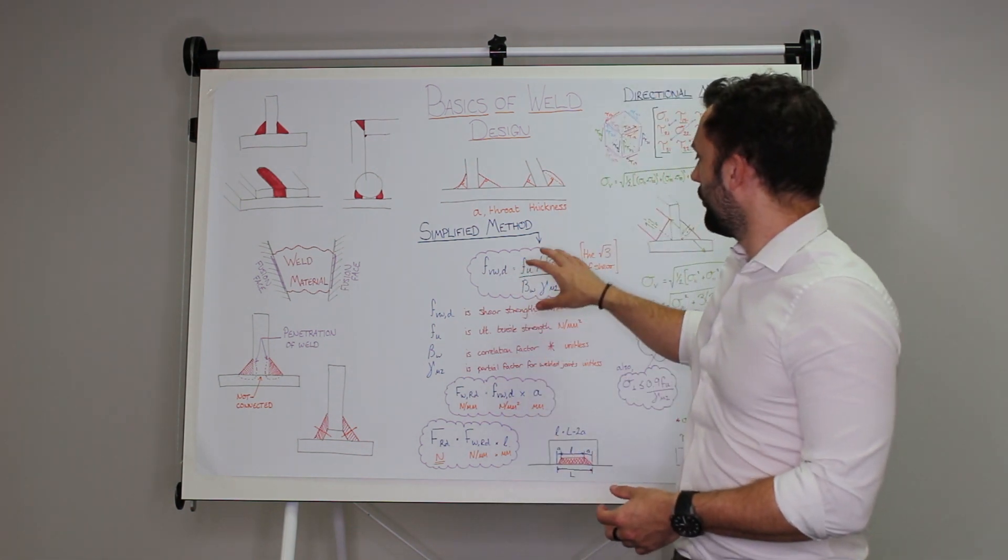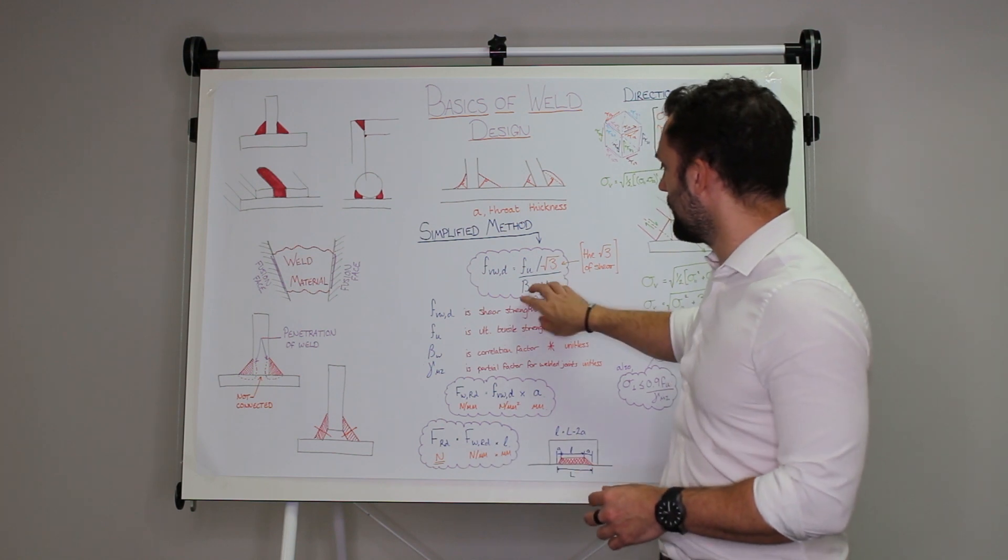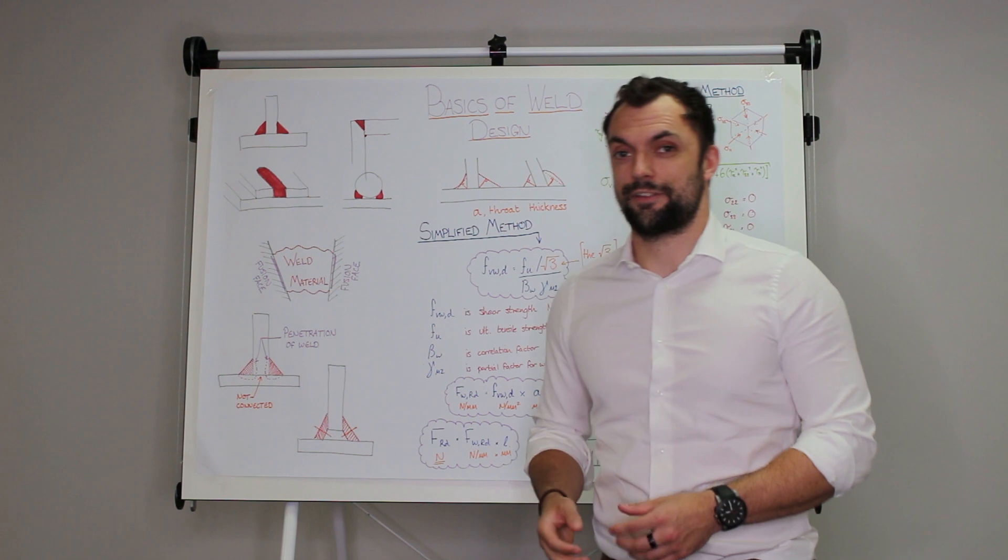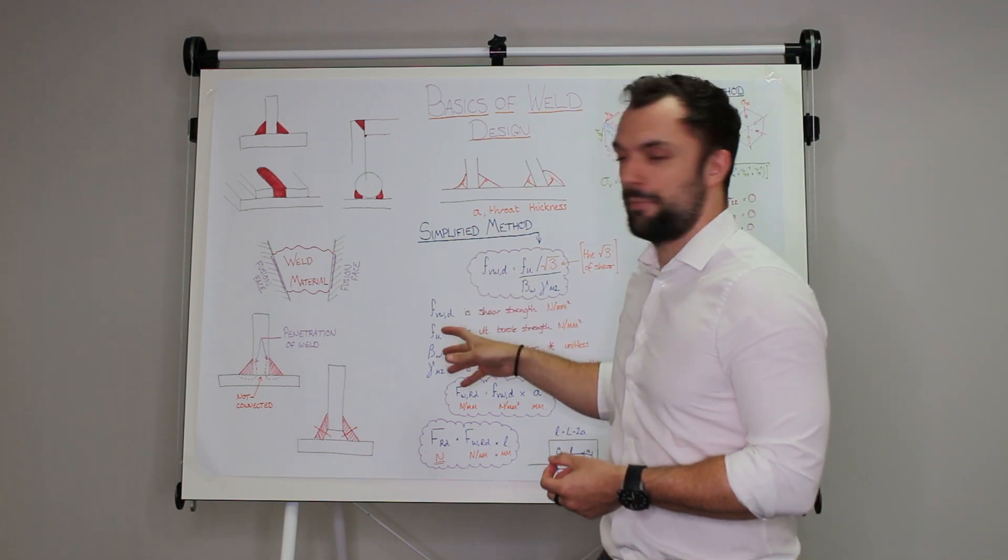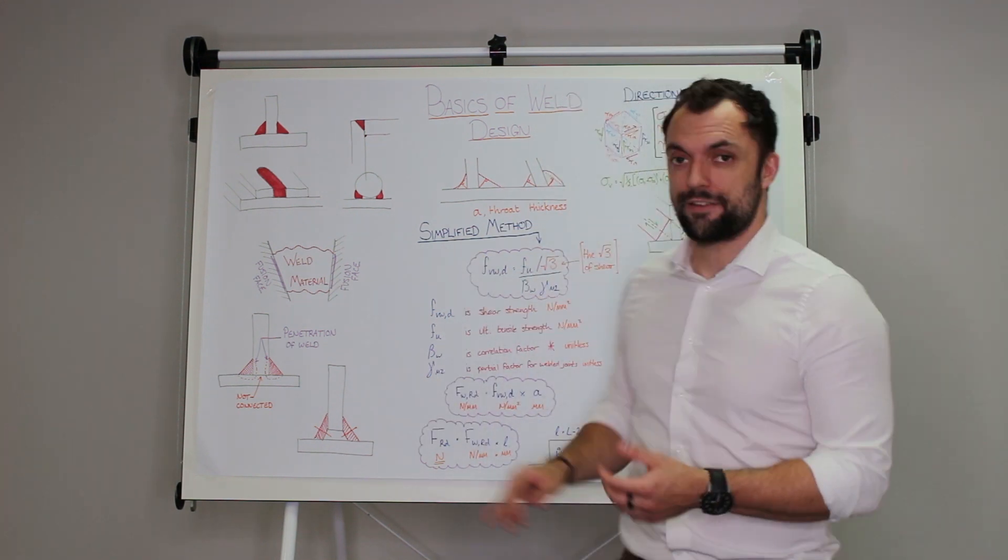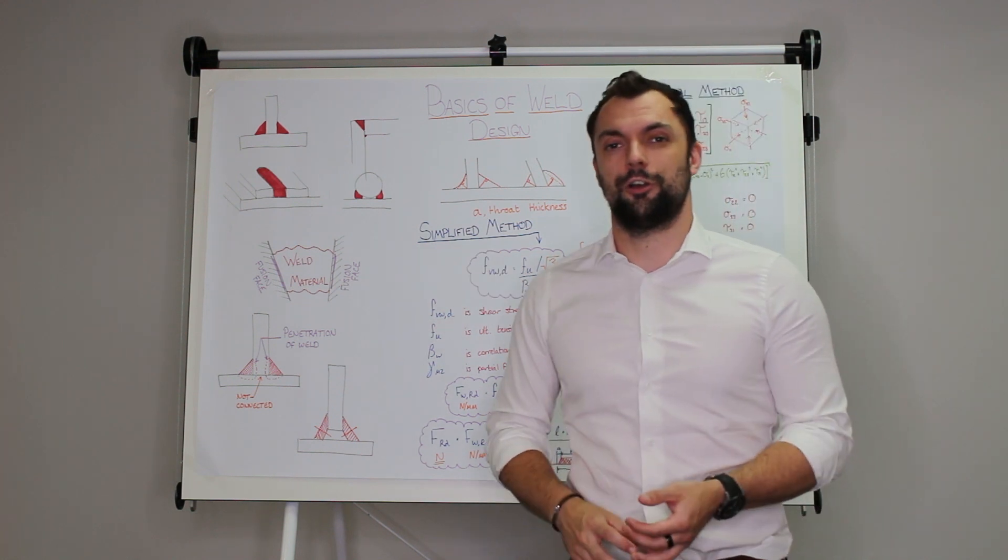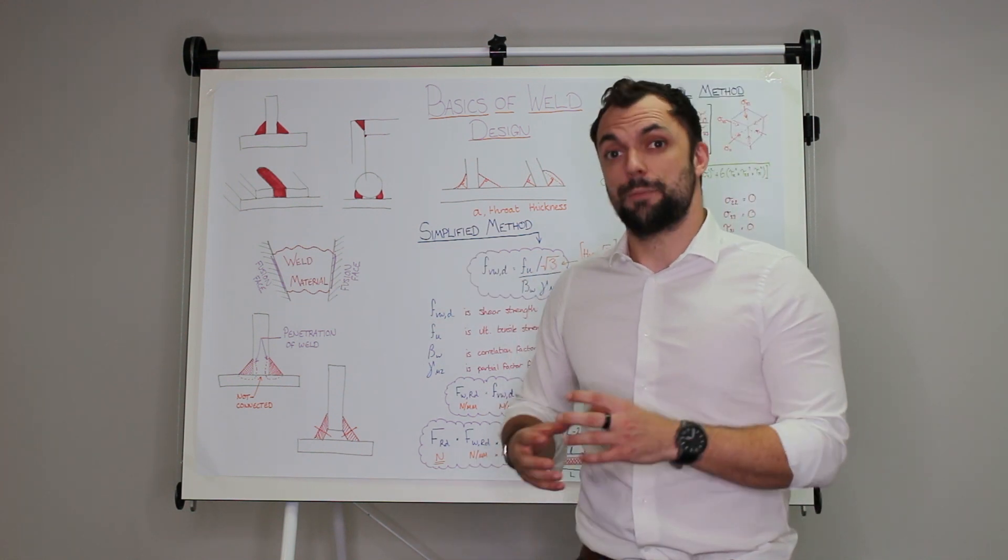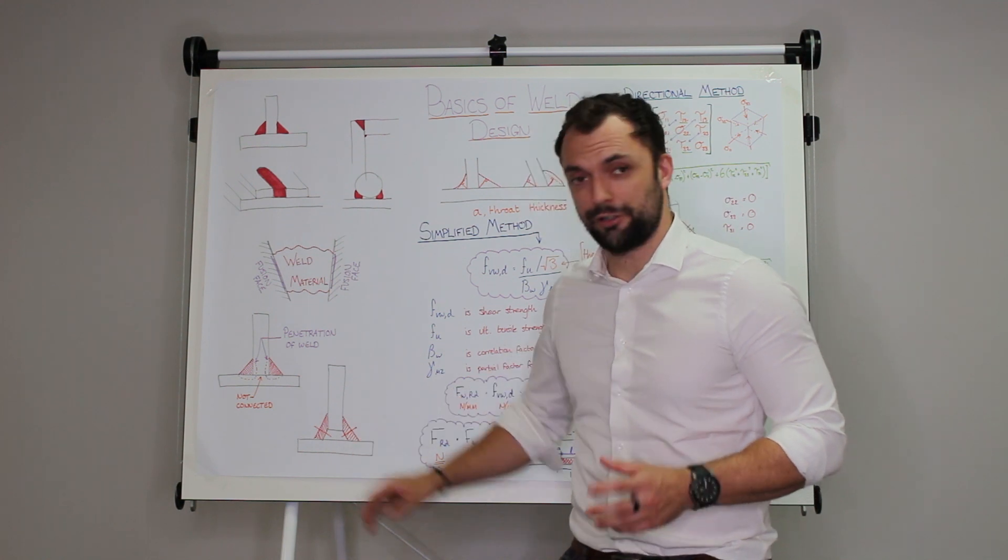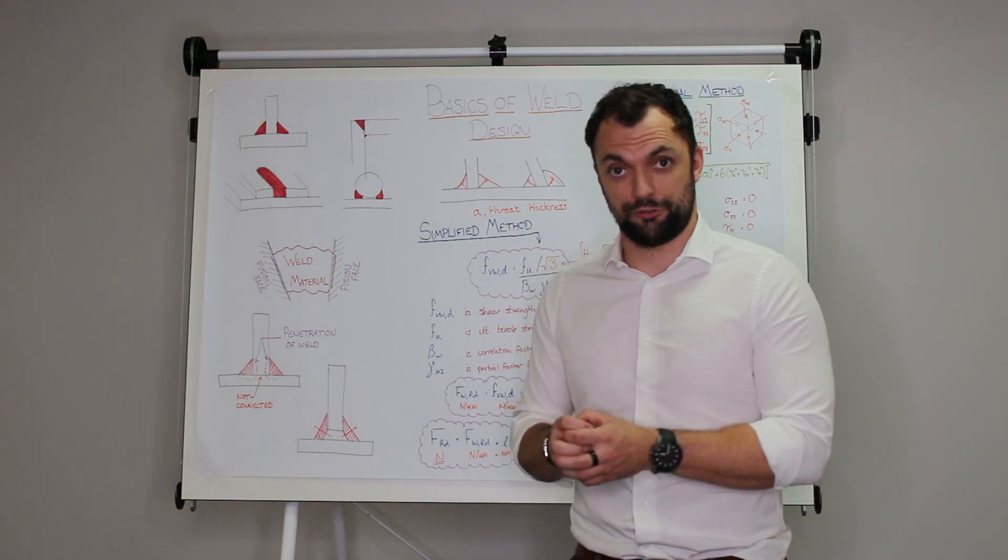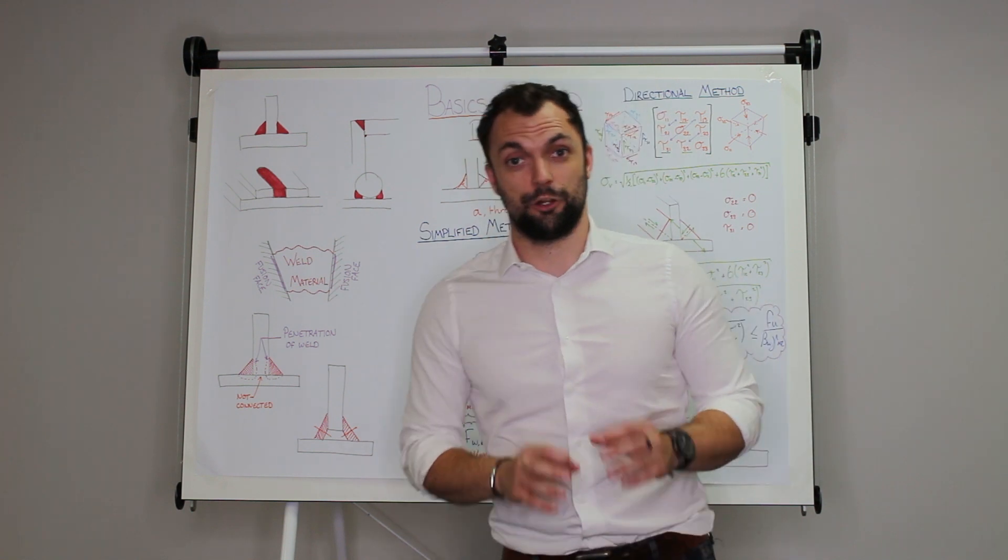So you multiply that ultimate tensile strength of the parent material by a factor of one over root three and you divide by these two factors here. You have a beta w which is a correlation factor between the strength of the filler material and the parent material. So when you're using a low grade parent material say S235 this beta w factor is less than one. So by dividing by something less than one you're actually making the weld stronger by calculation. So a weld is actually stronger than a weak parent material might suggest and that's because when you concentrate in stresses around this strut this weld material is stronger than the parent material and will have a more concentrated stress compared to the parent material around it. So you can actually get away with a little bit more stress than the parent material on its own might suggest.